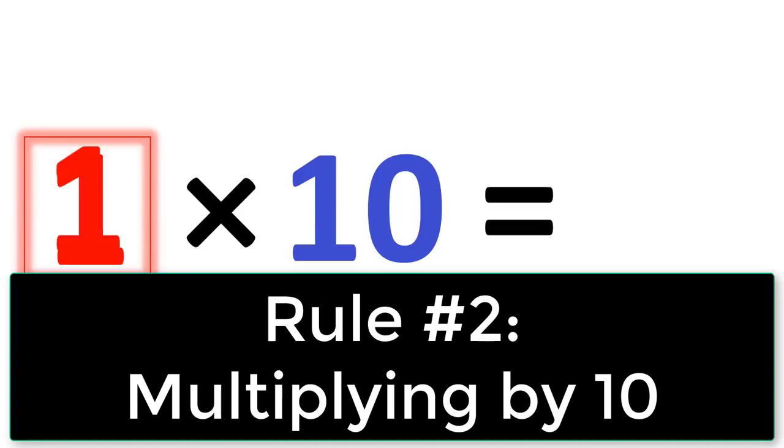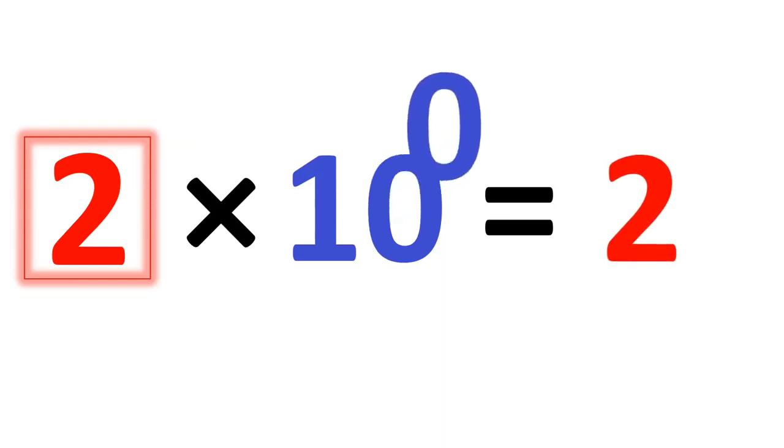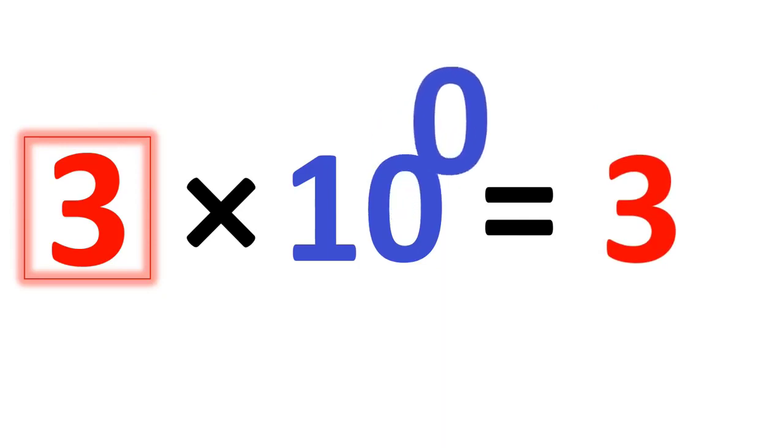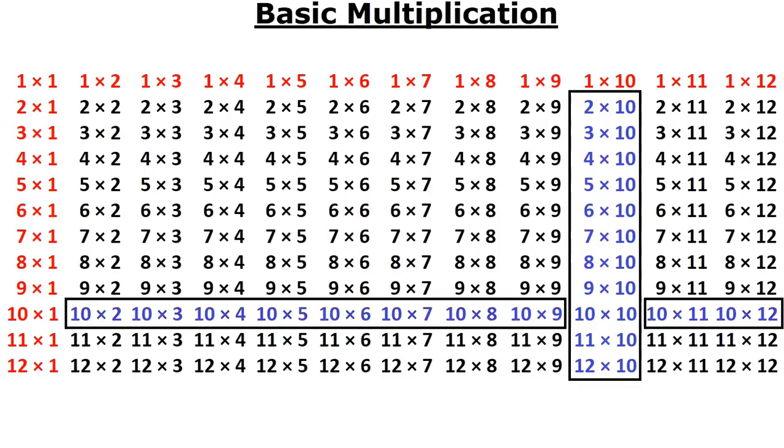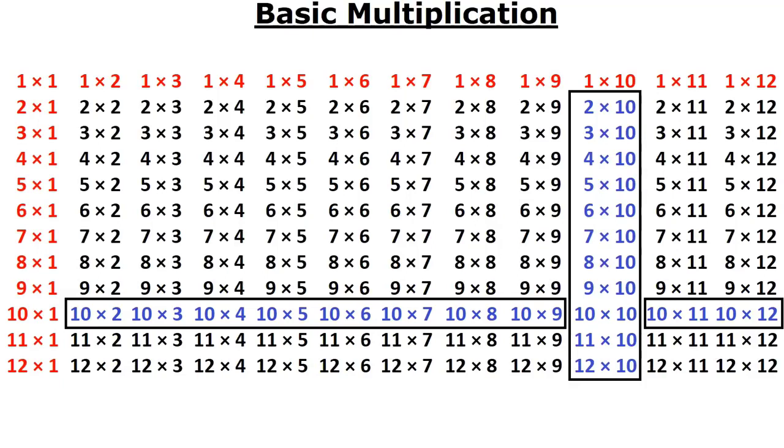Next rule is multiplying times 10. When it comes to the rule of multiplying times 10, 0 is the hero. You take the number you start with and you add a 0. 2 times 10 is a 2 with an added 0. 3 times 10 is 3 with an added 0, etc. You also know the reverse. You also know 10 times 2, 10 times 3, 10 times 4. So now from those two simple rules, you now have learned 44 multiplication tables, and now you have 100 remaining.